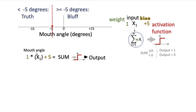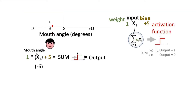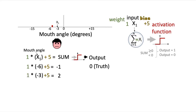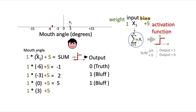Let's go through the new prediction scenarios. If Sam's mouth angle is negative 6, the sum equals negative 1. Fed through the activation function, it's less than 0, so the output is 0 and Sam is telling the truth. If Sam's mouth angle is negative 3, the sum equals 2, and applying the activation function gives an output of 1 — Sam is bluffing. When the mouth angle is 0, the sum is negative 5 plus 0... giving an output of 1, and Sam is still bluffing. And when the mouth angle is 3, the sum is 8 and the output is 1 — Sam is bluffing. Our new perceptron model has found the new mouth angle at which Sam transitions from telling the truth to bluffing.